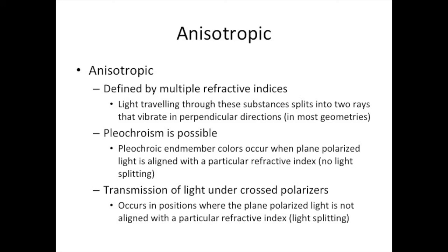Our next video will divide anisotropic materials into two subgroups. The nomenclature used for the refractive indices — epsilon and omega — is associated with uniaxial minerals, which are defined by two refractive indices. There are also biaxial minerals, defined by three refractive indices. Uniaxial minerals have one optic axis, whereas biaxial minerals have two. We'll flesh out concepts introduced today and explore some new minerals. Thanks for watching everybody and have a nice day!